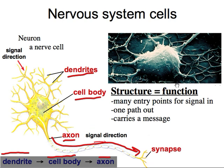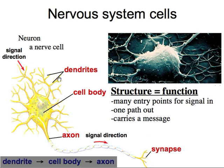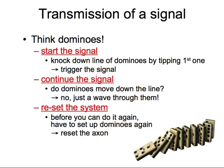Structure equals function — the shape always equals the job, no matter what we're talking about in biology. There are many different points for a signal to come in through the dendrites, so it has a very large net to catch as many different signals as possible to help in communication. But there's only one pathway out, which means it can gather a lot of different inputs and send them all in the same direction very quickly. The direction a message travels is always dendrite to cell body to axon — that is always the direction.